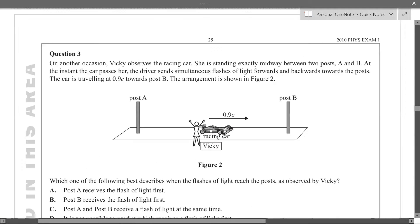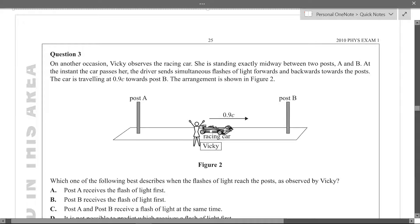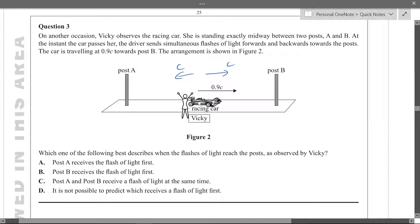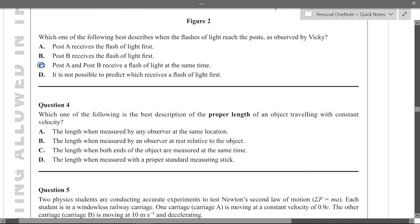So this time Vicky is observing a race car. She stands exactly between the two posts and the driver sends two flashes of light backwards and forwards and she's travelling at 0.9c. Susanna's asking which of the following best describes when the light reaches Vicky. So we know it's going to be c because as soon as the light leaves the car its speed is c and the distance because she's standing midway the distance will be the same so time equals distance over speed. The distance and the speed are the same so the time should also be the same.